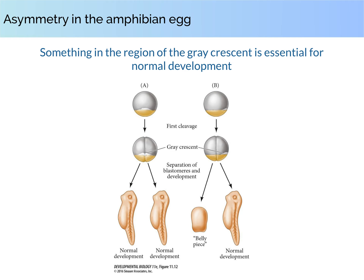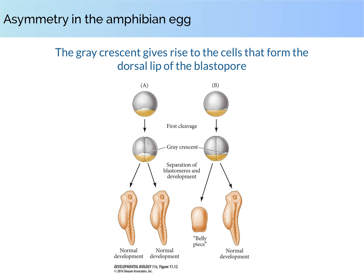Recall that the first cleavage plane normally splits the Gray Crescent equally between the two blastomeres. If we were to separate these cells, two complete larvae would develop; but if the Gray Crescent material passes into only one of the cells, then only the blastomere that contains the Gray Crescent develops normally. So there is something in the region of the Gray Crescent that is essential for normal embryonic development in amphibians. Indeed, the Gray Crescent region gives rise to the cells that become the dorsal lip of the blastopore, the site where gastrulation begins.